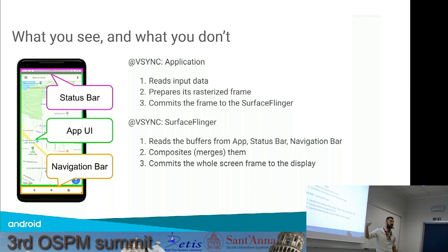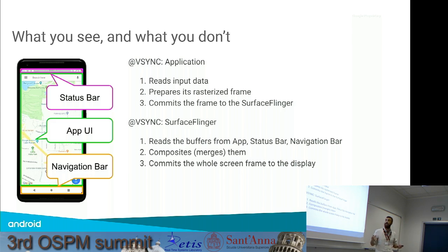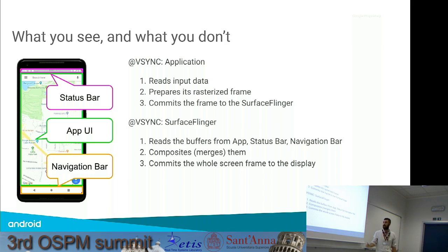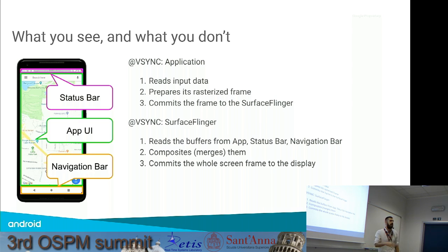Surface Flinger is a process that lies in the Android framework. Periodically, it reads all the inputs from all applications — the status bar, application UI, and navigation bar — and puts them all together in a single frame, then commits everything to the display controller.